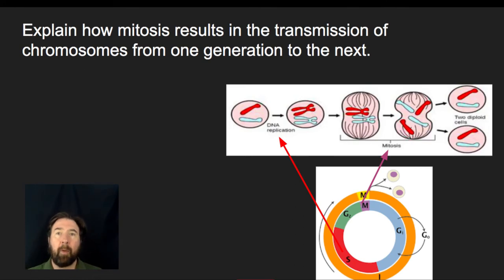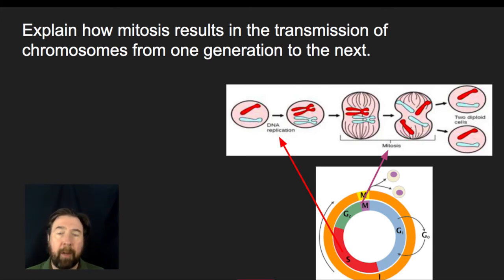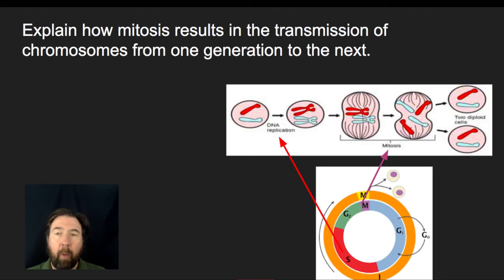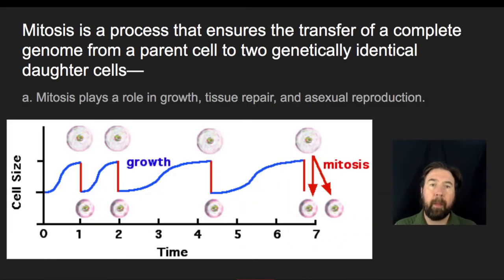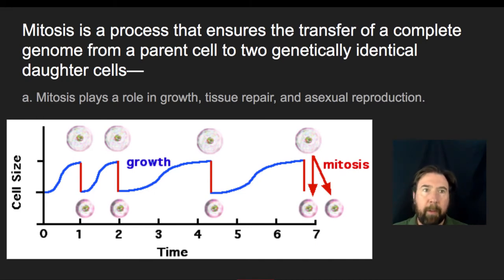Mitosis is going to be the conservation of the initial genetic information into two identical daughter cells that have the same genetic information as the original parent cell. When I'm in G1 of the initial parent cell, or in G1 of one of the daughter cells, the genetic makeup of those cells is identical. Mitosis is the process that ensures the transfer of the complete genome from parent cell to daughter cell.